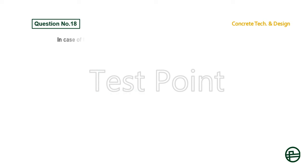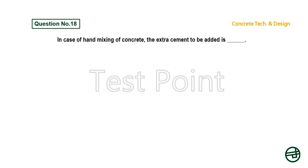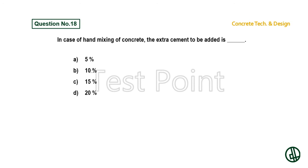Question number 18: In case of hand mixing of concrete, the extra cement to be added is — Option A: 5%. Option B: 10%. Option C: 15%. Option D: 20%. Answer is Option B: 10%.